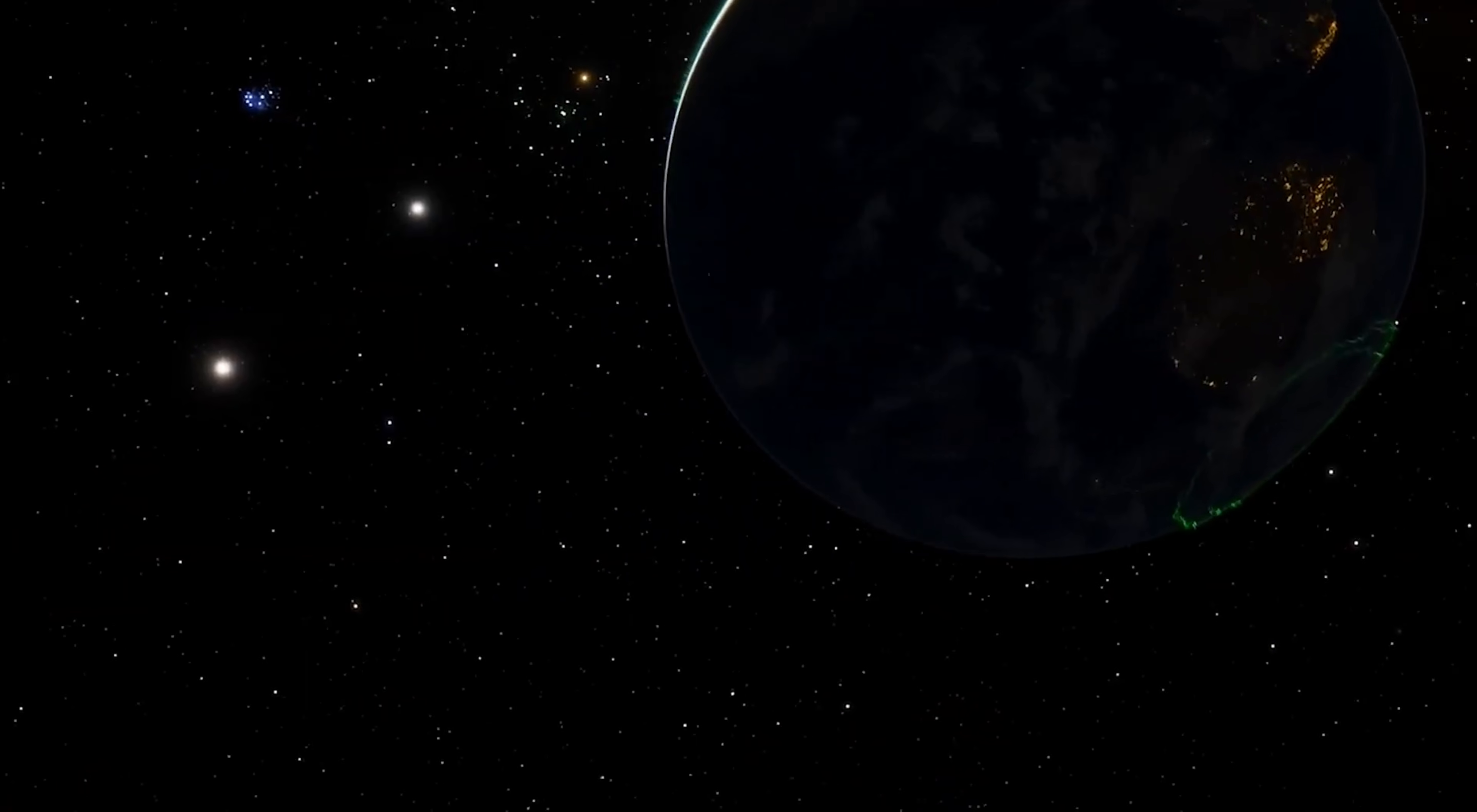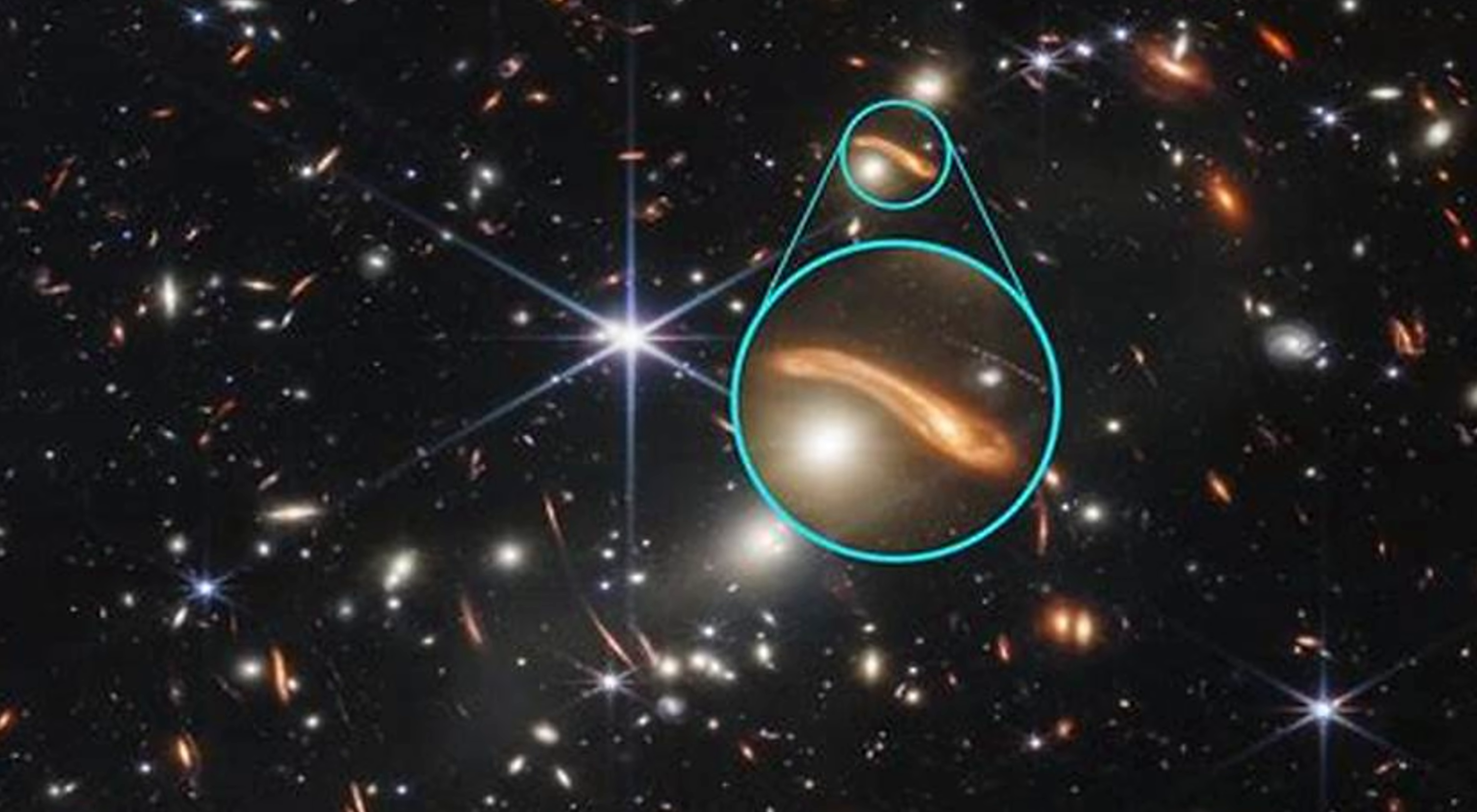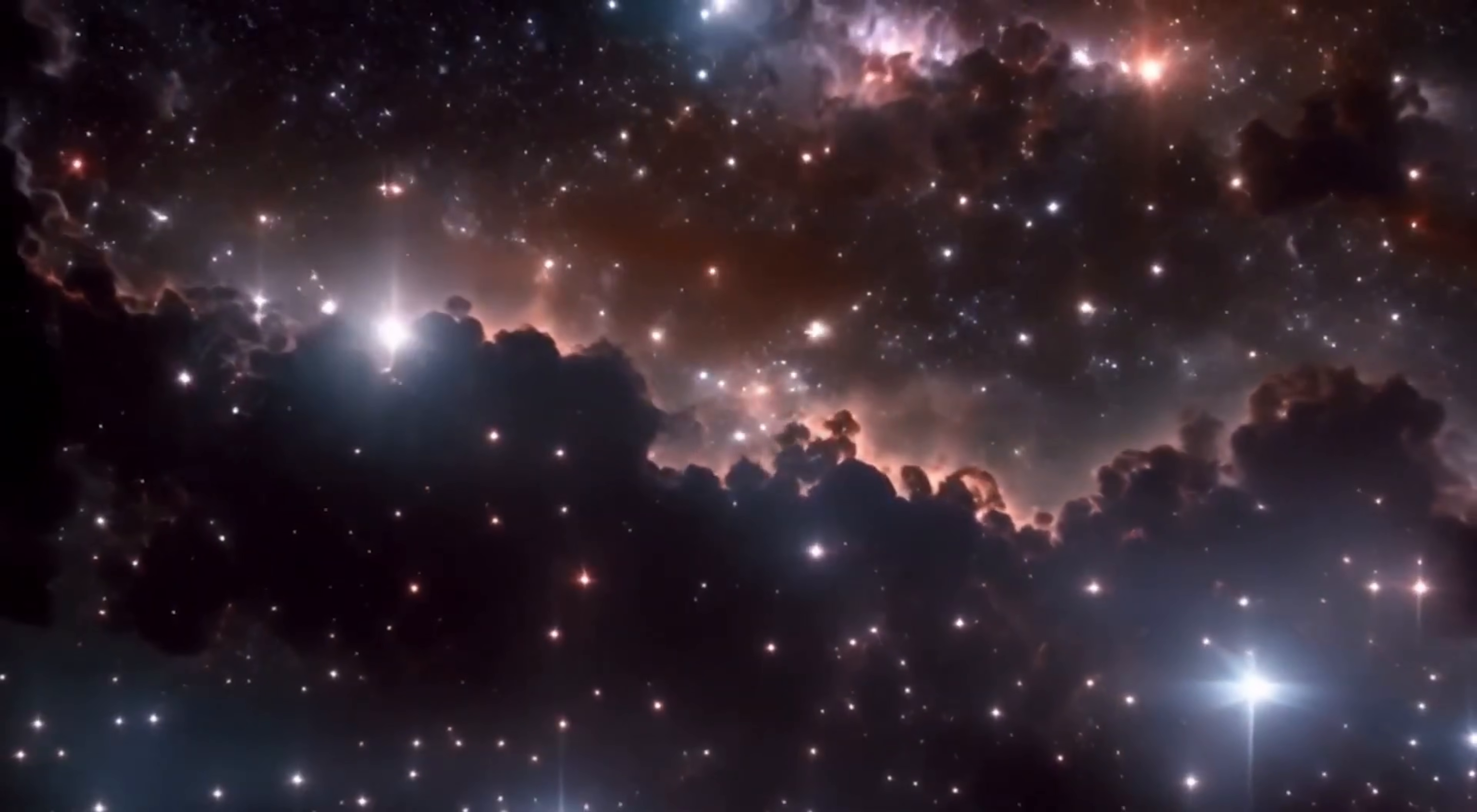One of the standout images from Webb's initial release is its deep field, an image of a galaxy cluster called SMACS-0723. Capturing this stunning array of galaxies, the image reveals thousands of galaxies in a single view, many of which are located billions of light-years away. The level of detail Webb provides is mind-blowing, showing distant galaxies in incredible clarity and depth.